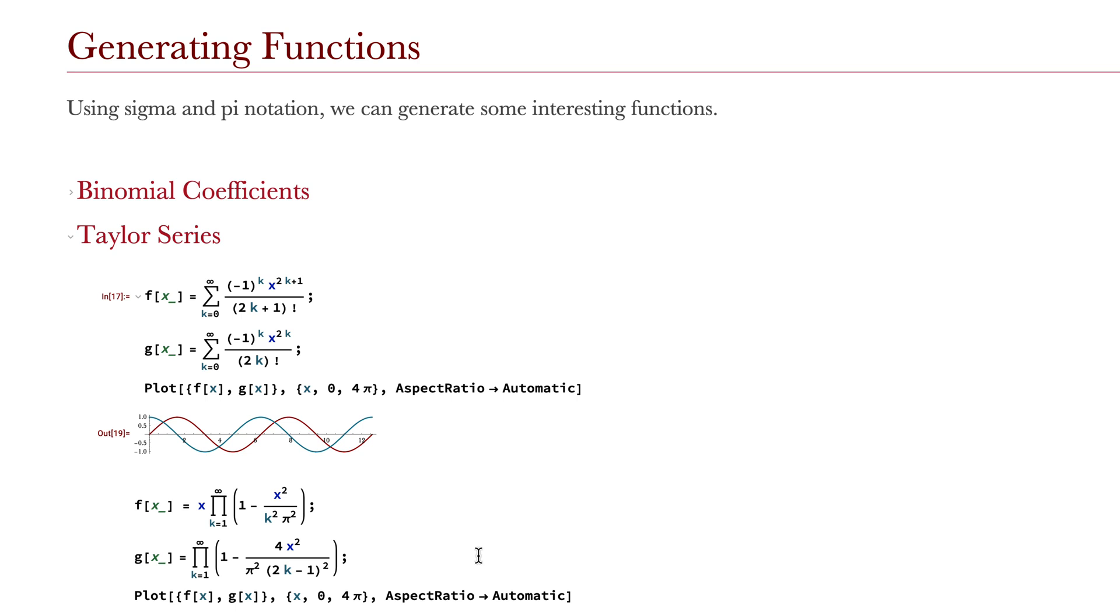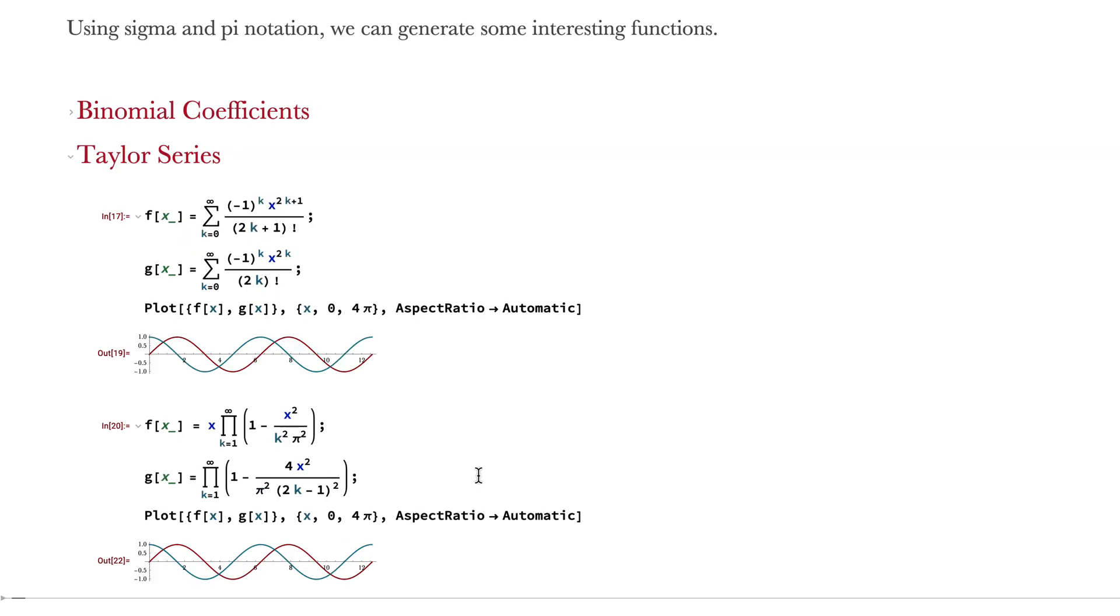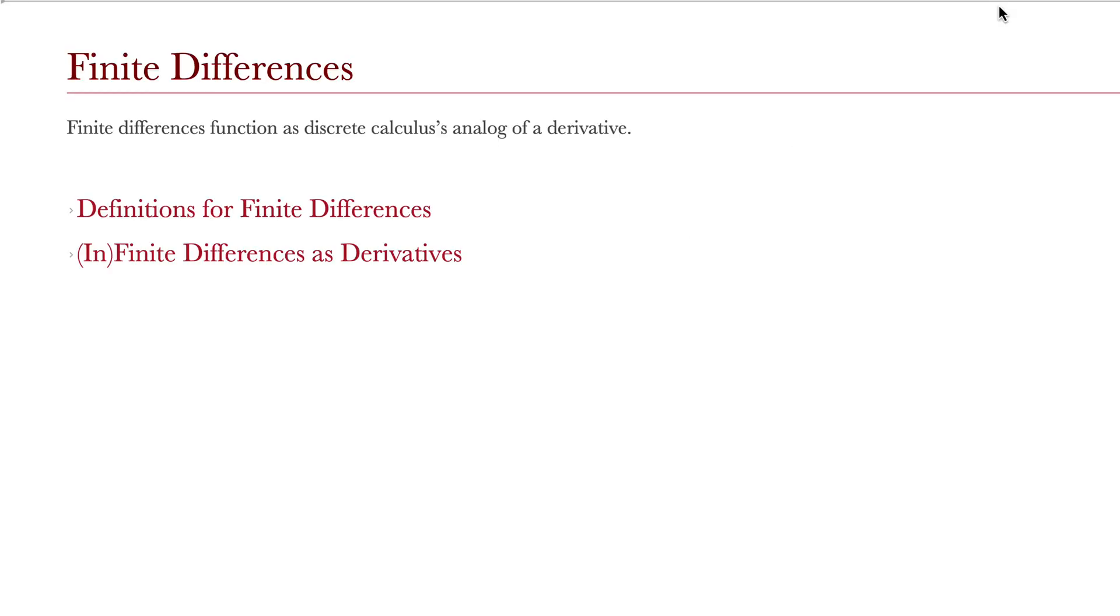We can also use pi notation to write out similar approximations, but ones that aren't actually Taylor series. Evaluating these in the Wolfram language takes a little bit longer, but it still comes out to be sine and cosine of x.